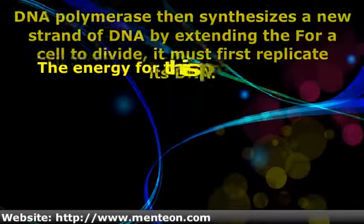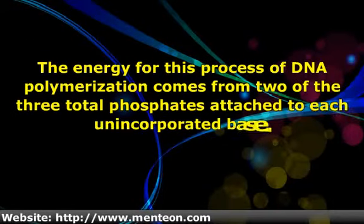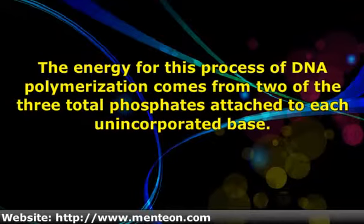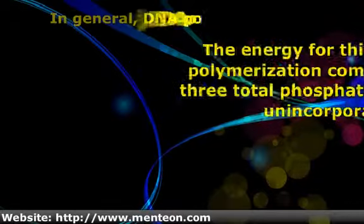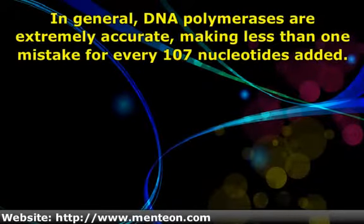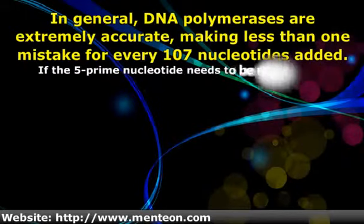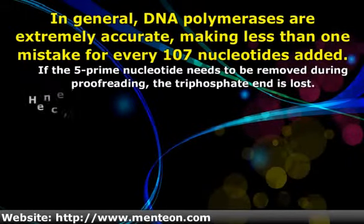The energy for this process of DNA polymerization comes from two of the three total phosphates attached to each unincorporated base. In general, DNA polymerases are extremely accurate, making less than one mistake for every 10 to the 7 nucleotides added.